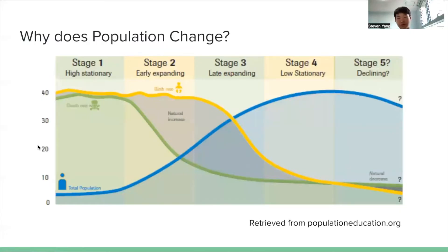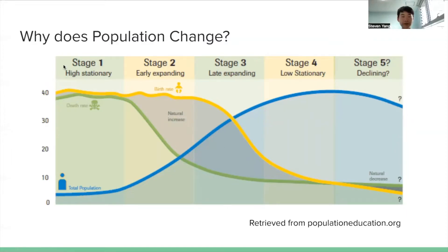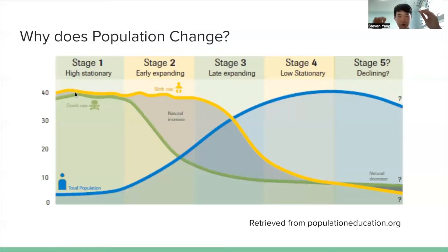So why does population change? What you're seeing here is a demographic transition model, which relates a country's population change based on the change in economic status. If you follow my cursor, you can see three lines: the yellow line is the birth rate, the green line is the death rate, and the blue line is the total population. Stage one is the high stationary period when the country's economy is not developed yet. The death rate is very high due to high infant mortality and a lack of advancement in medical technology, and households have many children but also many deaths with very low life expectancy. Since birth rate and death rate are equal, you have a stationary population.